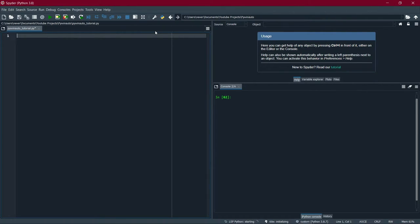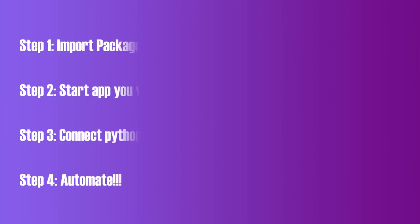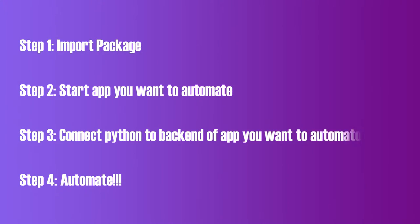The way you automate an application in Python is in a few steps: Step 1, import the package. Step 2, start the application you want to automate. Step 3, connect Python to the back end of the application. Step 4, automate.